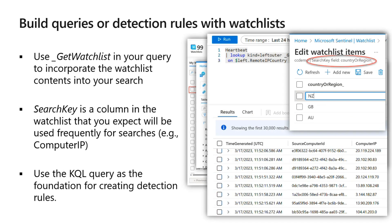You can query data in any table against data from any watch list by treating the watch list as its own table, using it with joins and lookups. To run a query against a watch list, you use the format underscore get watchlist and define the name of the watch list you want to get data from. There's also the concept of a search key — the name of a column in your watch list that you expect will be used as a join with other data or as a frequent object of searches.